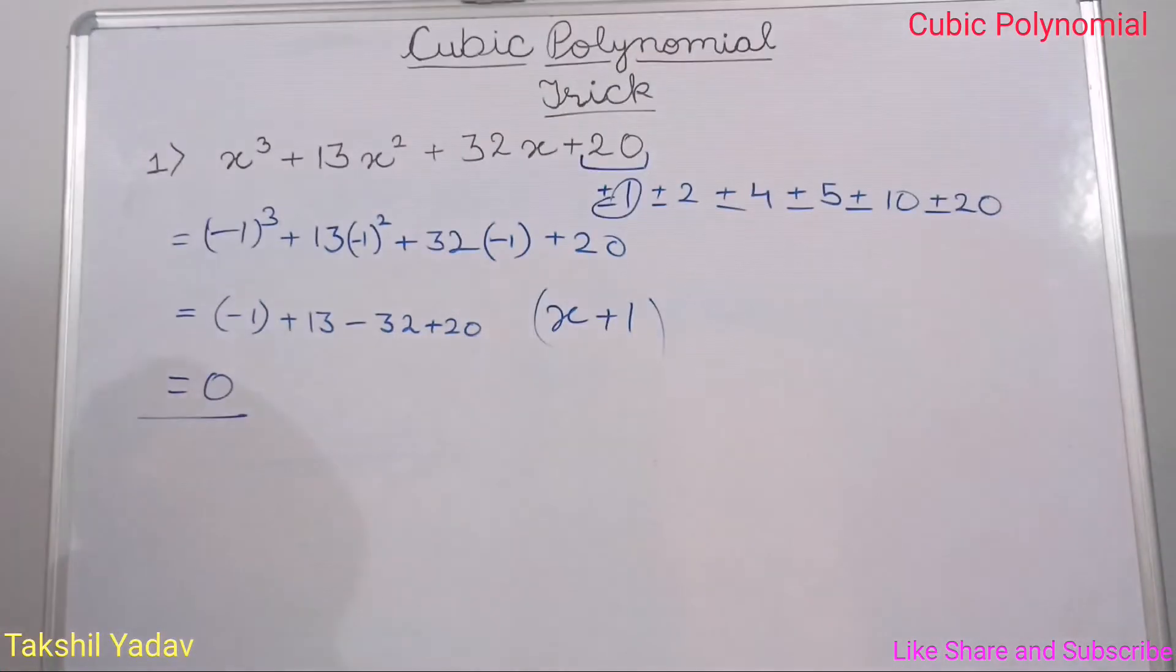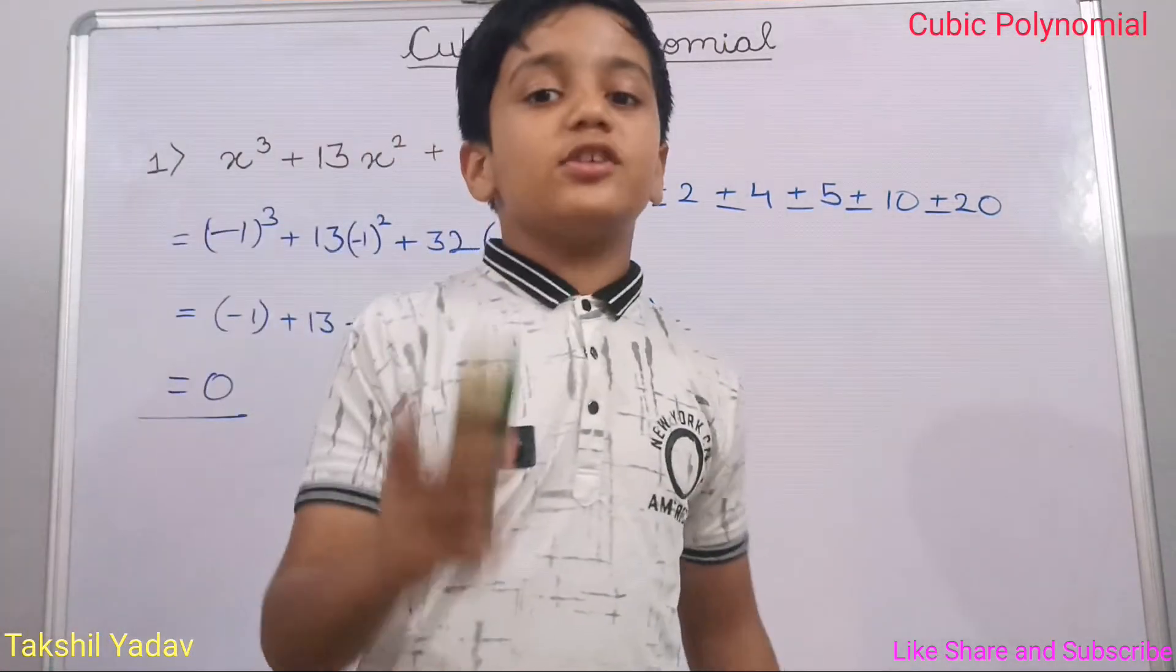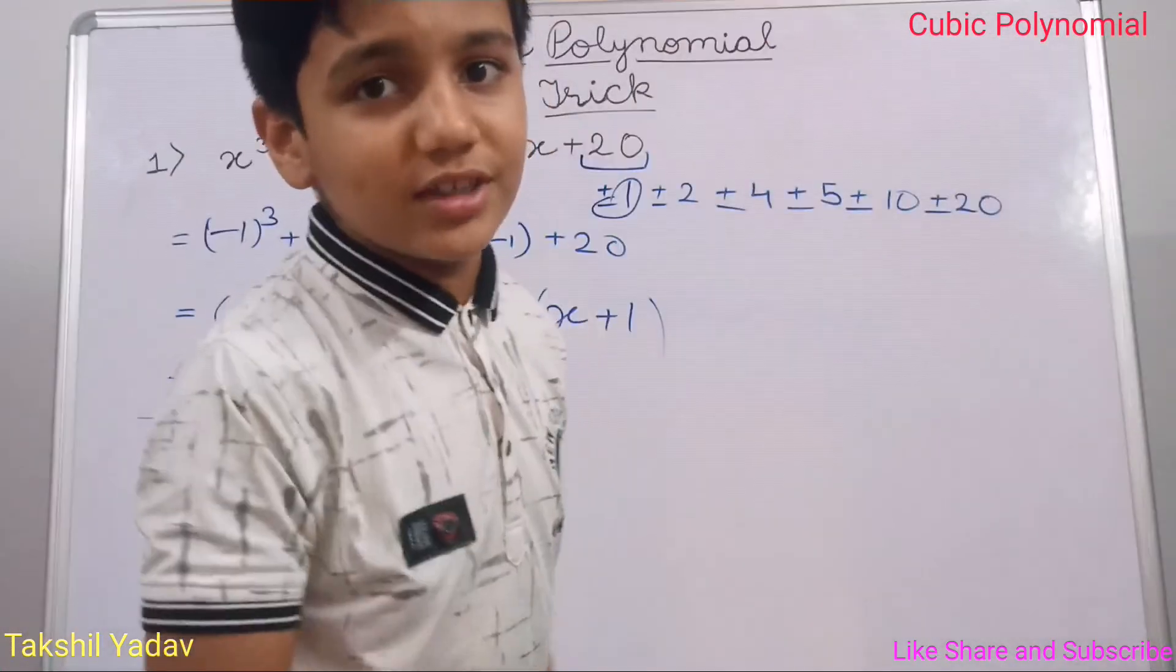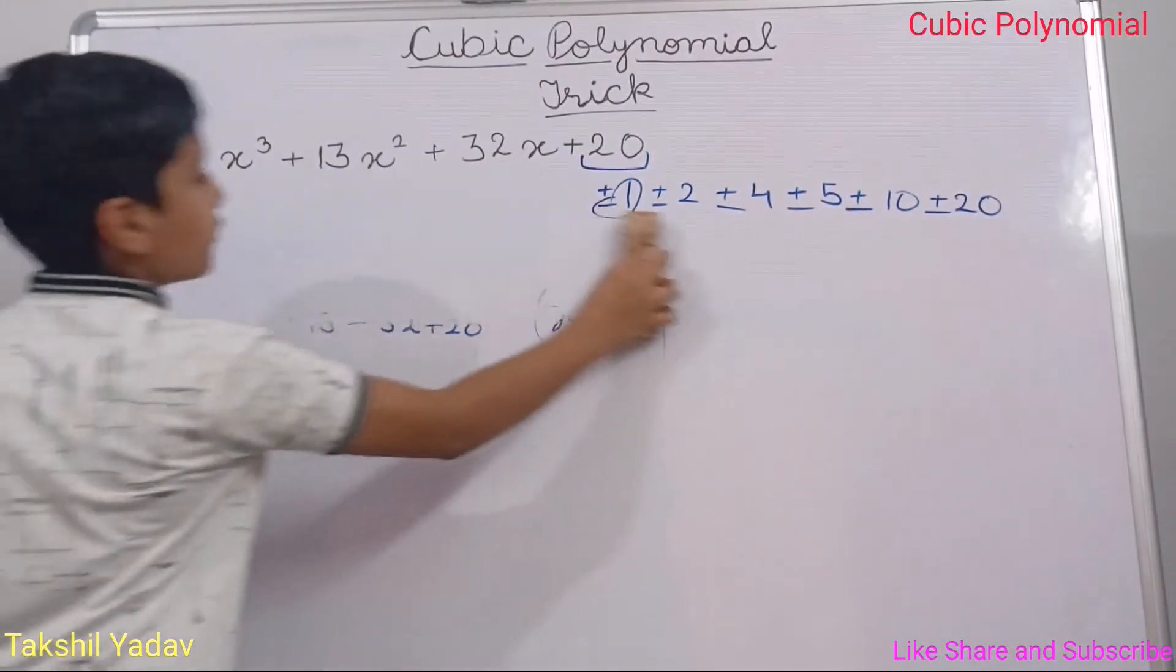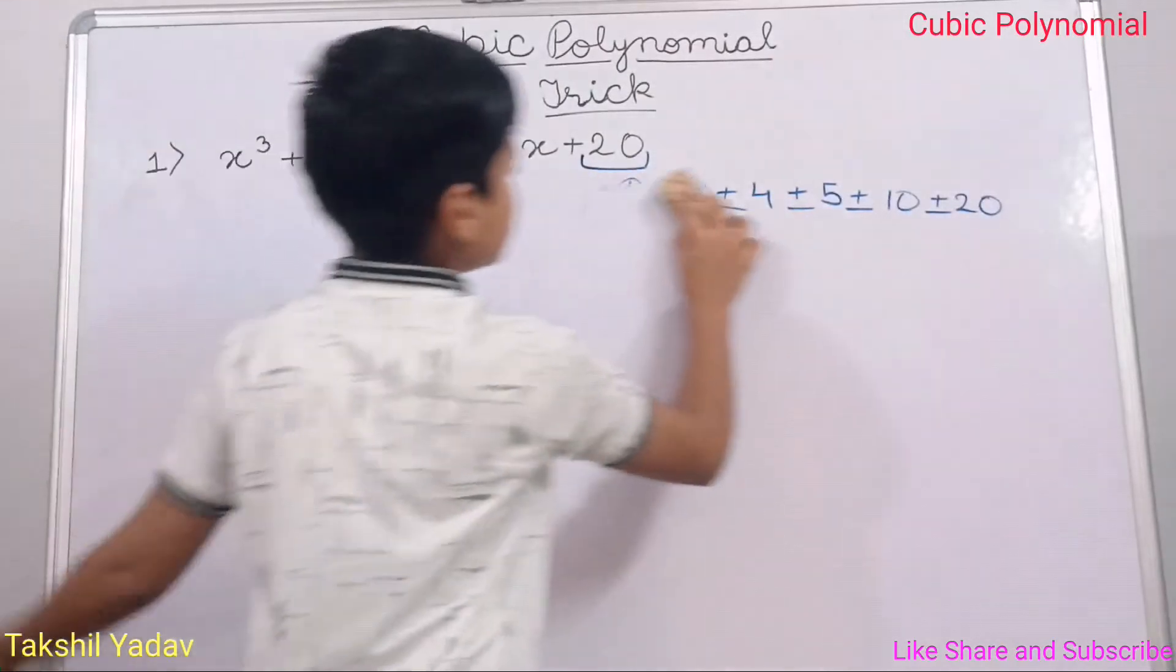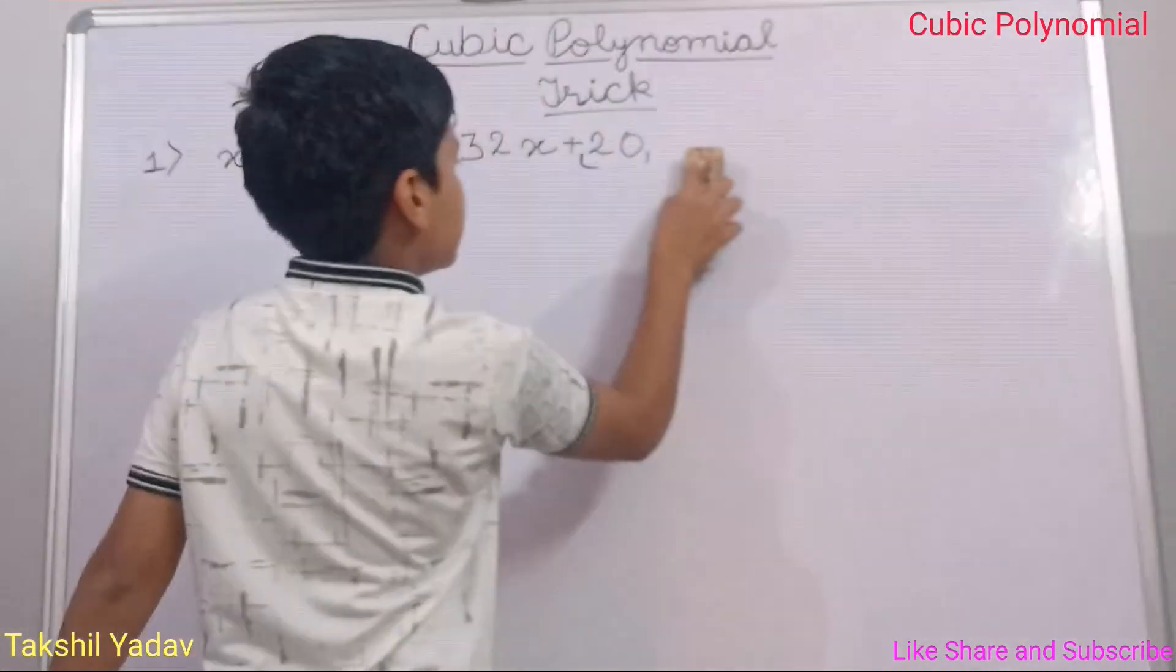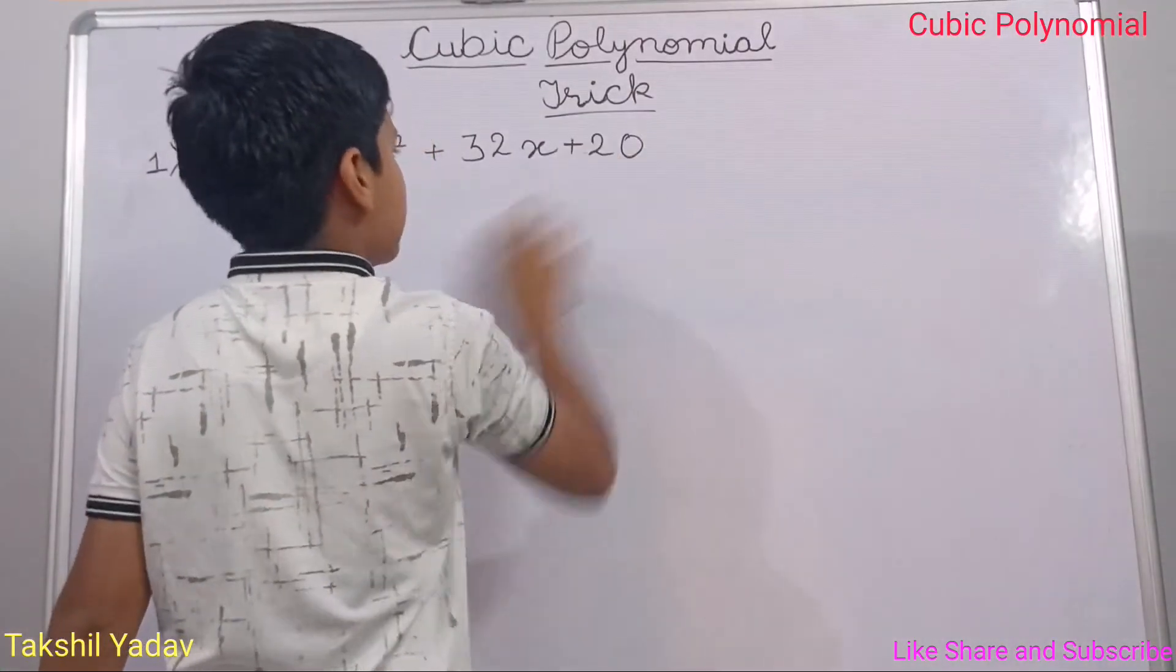Now we have to find the remaining two factors. For that, I will use the magic cross method, which I have already shared with you in the previous video. So let's see that method. But before that, we will have to use something else. Now, let's continue.